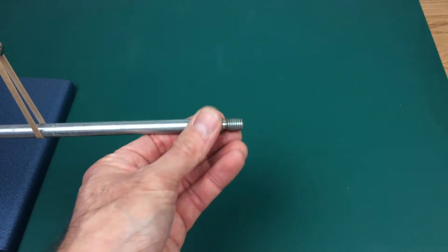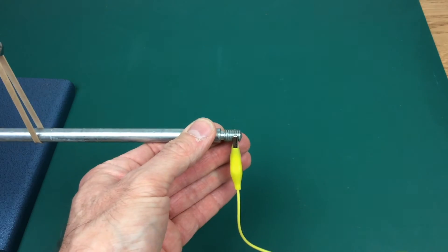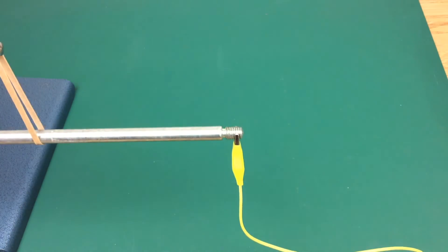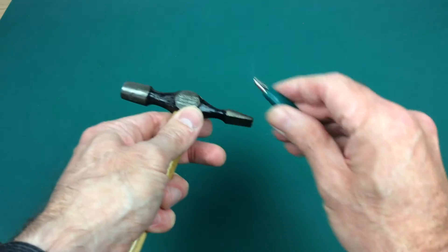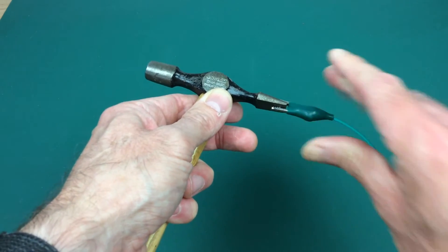Then connect one of the crocodile clips to the very end of the rod. It doesn't have to be absolutely at the end. And connect the other crocodile clip to the back of the hammer.